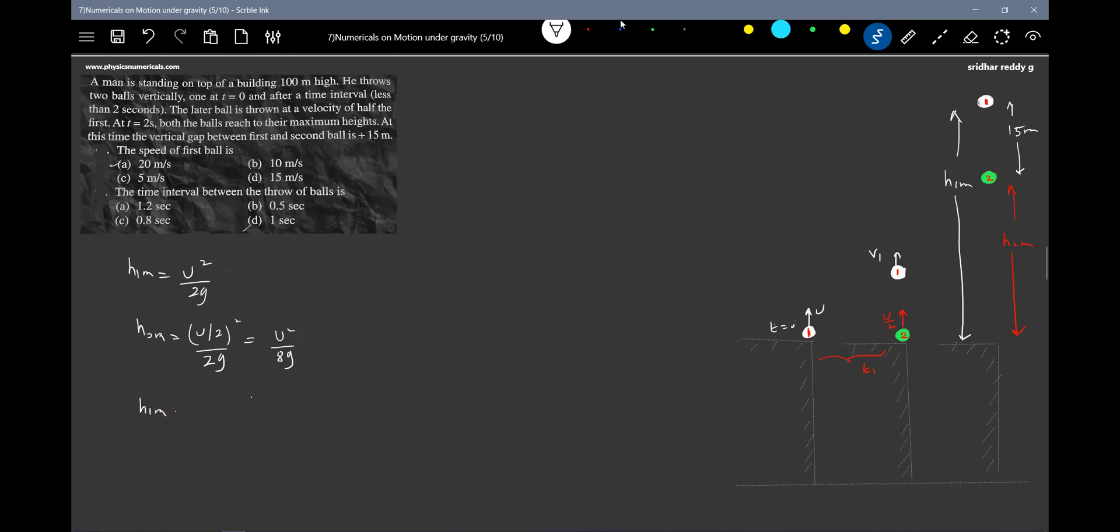The difference of that we know. H1M minus H2M: u squared by 2g minus u squared by 8g. So this is equal to 15. So 3u squared by 8g.